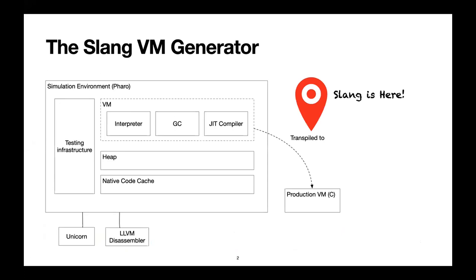We are working on the Pharo VM. We have a VM generator called Slang. Our VM is built in a very special way — it is completely written in Pharo. The interpreter and GC and JIT compiler are written starting in Pharo and eventually transpiled to C code. That is the production VM we have. This architecture helps us simulate the virtual machine, execute it as normal, and simulate the native code. Thanks to machine code simulators like Unicorn, we can simulate the JIT compiler code.